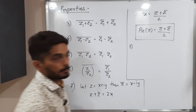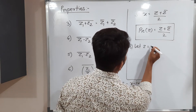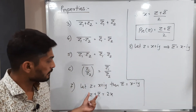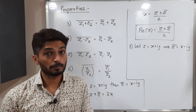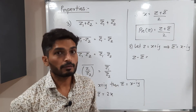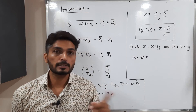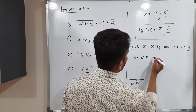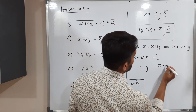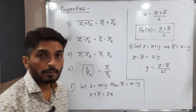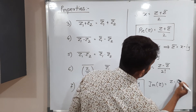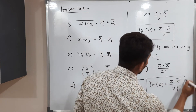For the next property, again let z equal x plus iy and z-bar equal x minus iy. Now we subtract: z minus z-bar. The x terms cancel, and subtracting the imaginary parts gives iy minus (minus iy) equals 2iy. So y equals z minus z-bar divided by 2i. Since y is the imaginary part of z, we get: the imaginary part of z is equal to z minus z-bar over 2i.